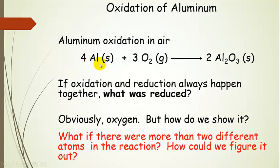If oxidation and reduction always happen together, then what was reduced? We know aluminum was oxidized, so what was reduced? Obviously, the only other type of atom in the substance is what was reduced — we could guess that. But how do we show it? How can we track where electrons go in these reactions? And if there were more than two different kinds of atoms in the reaction, what would we do? We wouldn't be able to just guess.